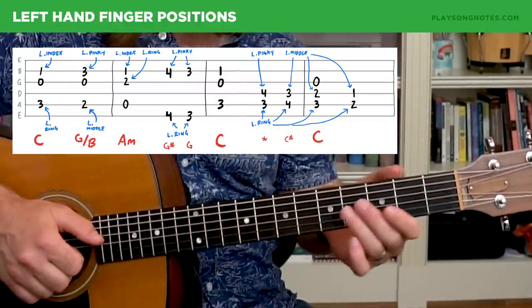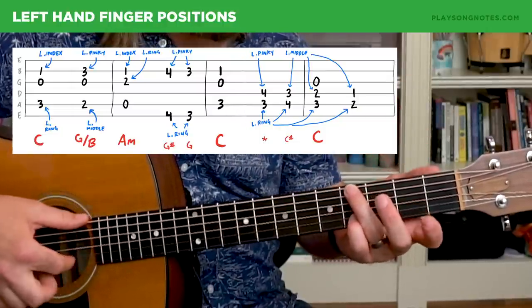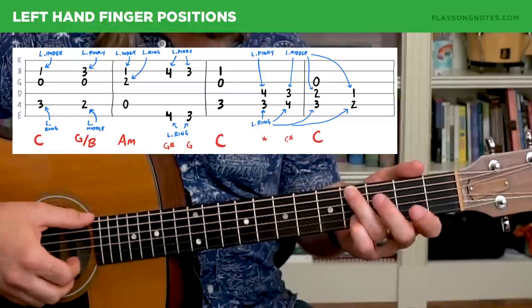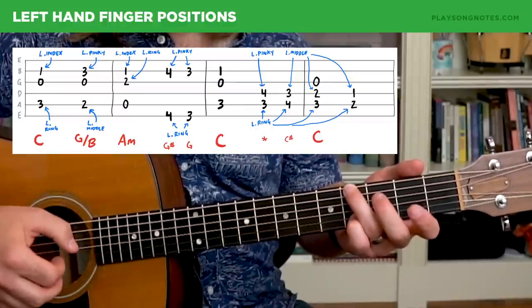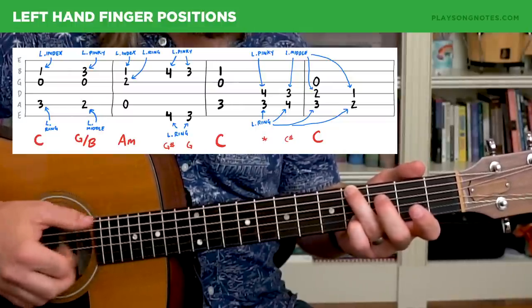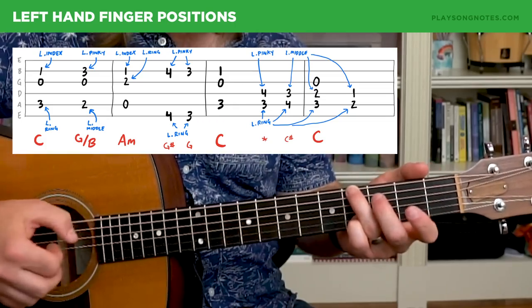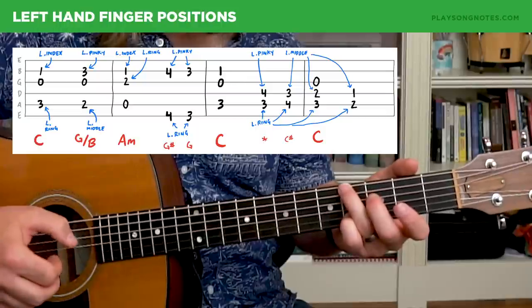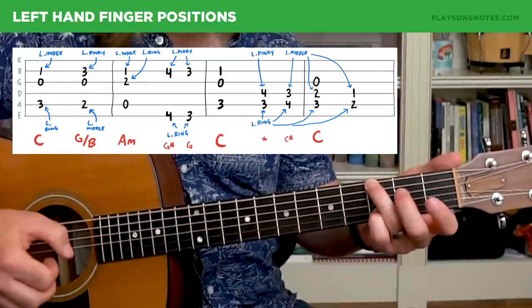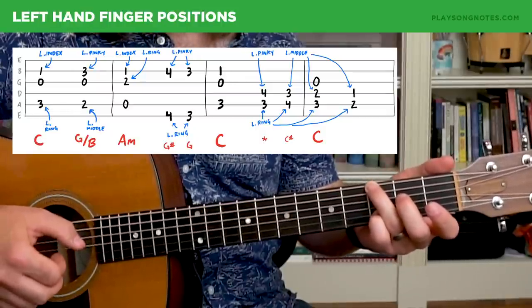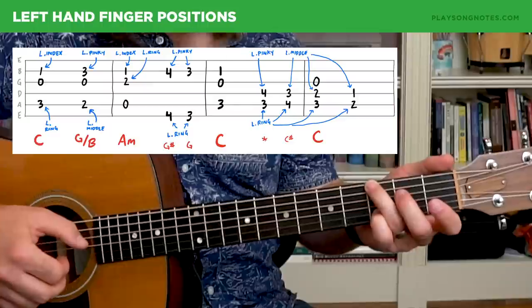The next part here, I have it as G sharp and G. It's basically just you're going to play the sixth string and the second string. So I'm using my left ring and left pinky fingers, and I'm basically going from fourth fret on the sixth and second string to third fret on the sixth and second string. So pretty straightforward there.